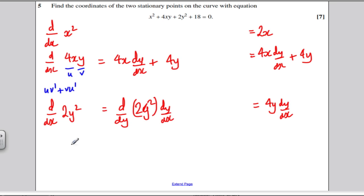Differentiating both sides, let's write the result. I would have 2x, I would have plus 4x dy by dx, plus 4y.